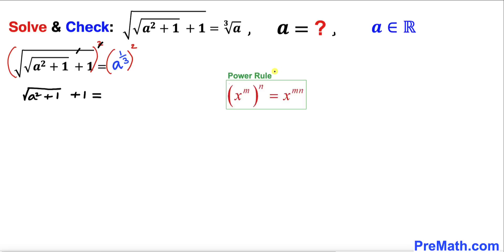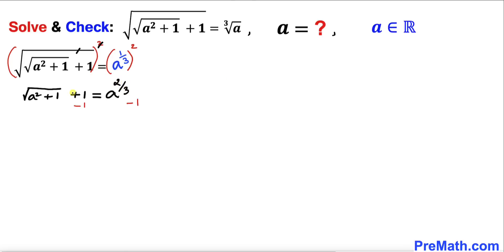Recalling the power rule of exponents, the right hand side becomes a to the power 2/3. Now subtracting one from both sides, we are left with the square root of a squared plus one equals a to the power 2/3 minus one.